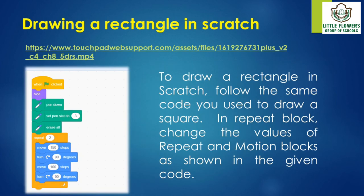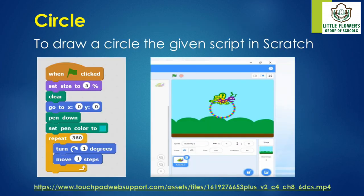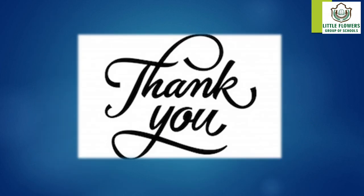To draw a rectangle in Scratch, follow the same code used to draw a square. In the repeat block, change the values of the repeat and motion blocks as shown in the given code. You can also draw a circle using a similar approach. Thank you, that's it — I hope the chapter and the topics are clear. Take care.